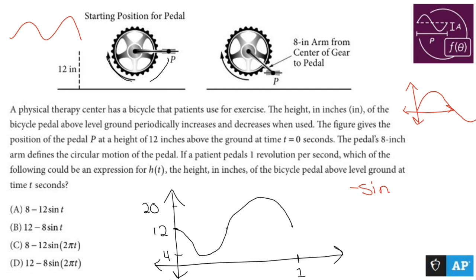My beginning spot is not zero, it's 12. Since I go up to 20 and down to 4, I'm going to have an amplitude that goes up 8, down 8, which means we're going to throw an 8 here. So we have a negative 8 sine and a positive 12.